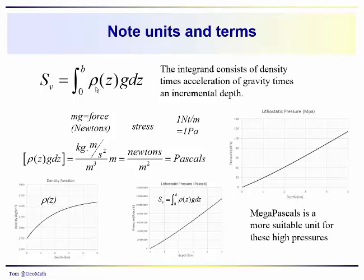So we have the mass times the acceleration. So we have density, which is in kilograms per cubic meter, times the acceleration, which is in meters per second squared. And then this is multiplied times dz, which is in meters.